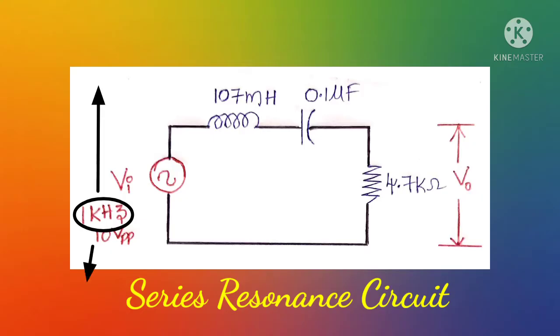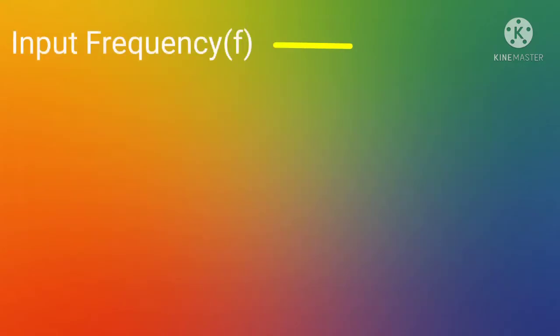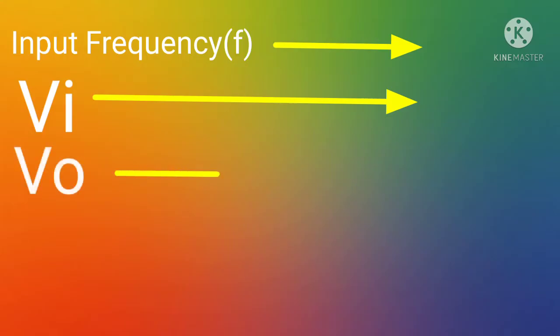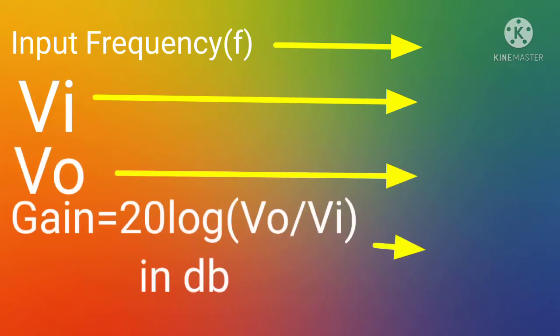By changing the input frequency, the output voltage will also change. For different frequencies we note down the output voltage. The tabular column includes: input frequency, input voltage, output voltage, and the gain, which is calculated using the formula 20 log(Vo/Vi).